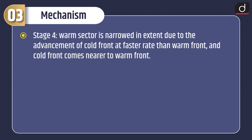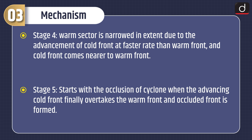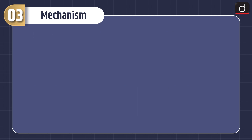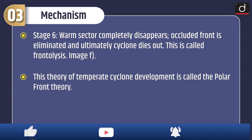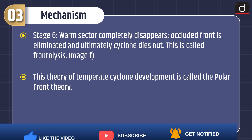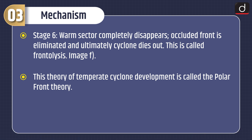Stage four: the warm sector is narrowed in extent due to the advancement of the cold front at a faster rate than the warm front, and the cold front comes nearer to the warm front. Stage five starts with the occlusion of the cyclone, when the advancing cold front finally overtakes the warm front and an occluded front is formed. Stage six: the warm sector completely disappears, the occluded front is eliminated, and ultimately the cyclone dies out. This is called frontal occlusion. This theory of temperate cyclone development is called the polar front theory.